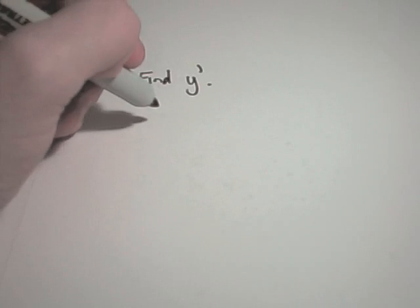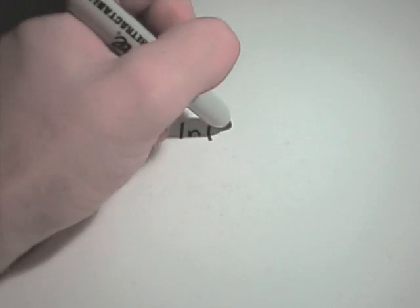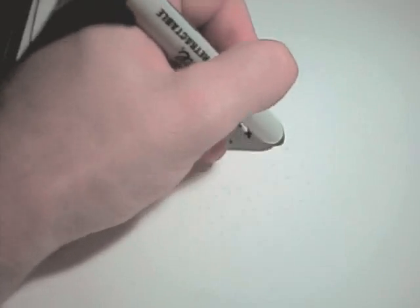In all of these, we'll simply find the derivative. Suppose in my first example, I have y equals the natural logarithm of x squared plus x.